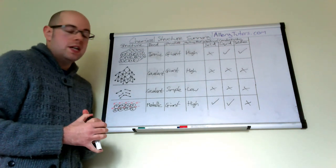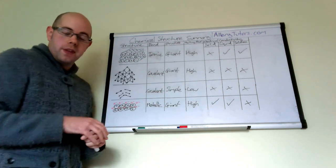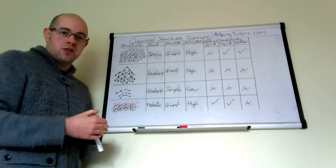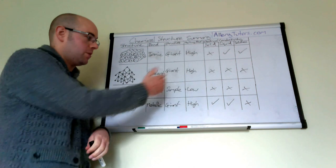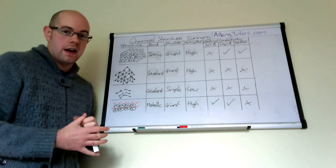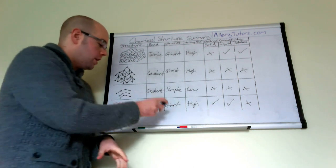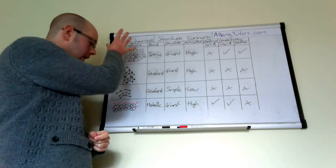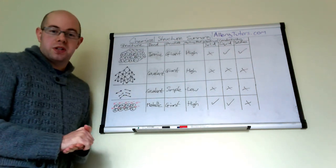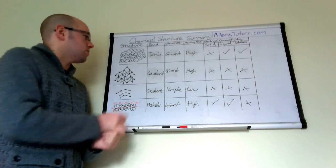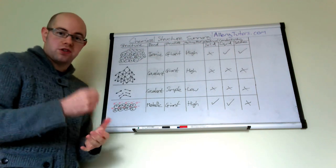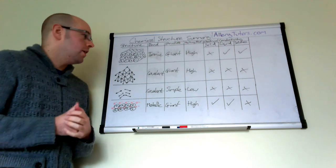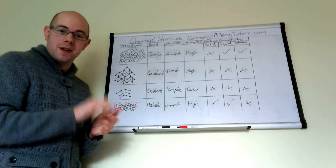You need to know all of these structures and be able to explain the properties, not just know them. Make sure you know the difference between structure and bonding — structure is how the atoms are arranged, while bonding is purely looking at the bond between the atoms. Hopefully that helps!